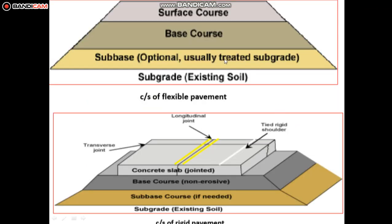Here we can see the cross-section of flexible pavement and cross-section of rigid pavement. In rigid pavement, we can see the longitudinal joint at the center, which runs along the length of the road. Transfer joints appear at every three to four meter intervals as transverse joints in a concrete pavement. These joints are not present in flexible pavement.